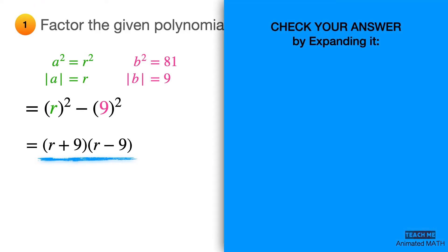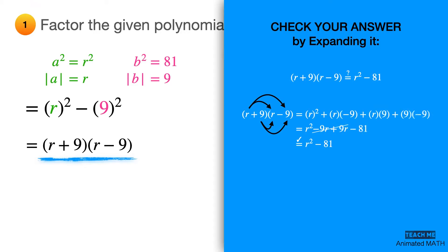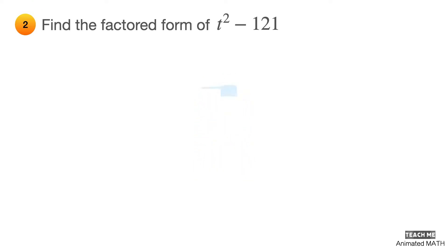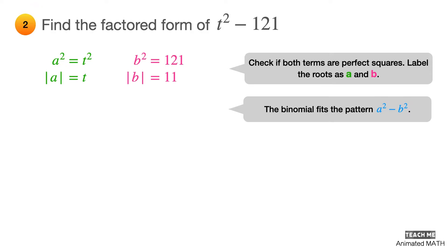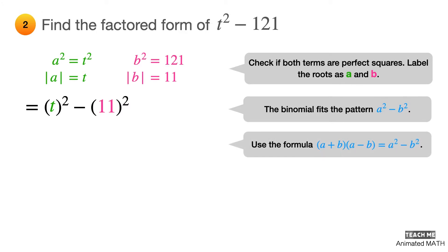Don't forget to check your answer by expanding it using polynomial multiplication as shown here. For the next problem, this binomial also has a minus sign in between, so let's check if both terms are perfect squares. Let a squared equal t squared and b squared equal 121. This fits the pattern where a equals t and b equals 11. Factor using (a + b)(a − b): the final answer is (t + 11)(t − 11).